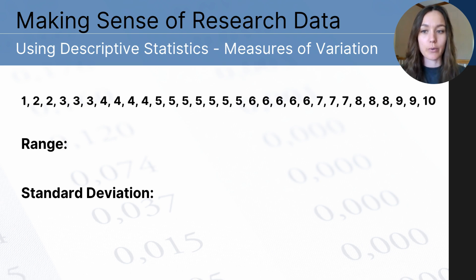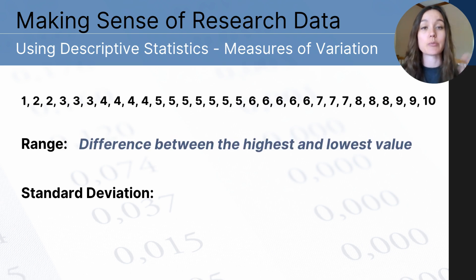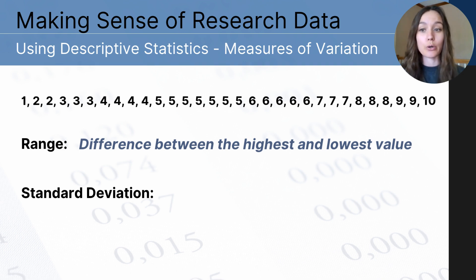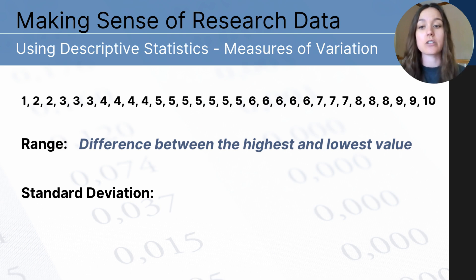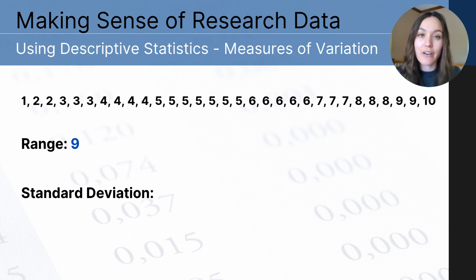You're likely familiar with range already, which is the distance between the highest score and the lowest score in a data set. Go ahead and pause the video to determine the range if you haven't already. From this data set, you should have found that the difference between 10 and 1 is 9. So 9 is our range — the difference between the highest and lowest score.